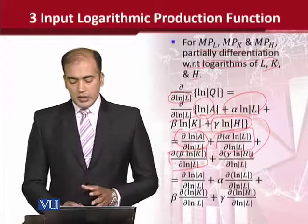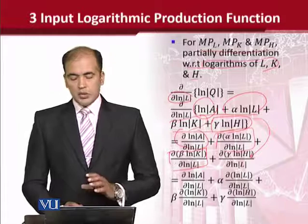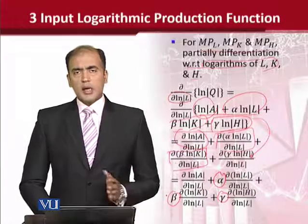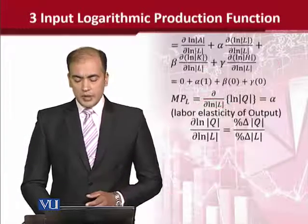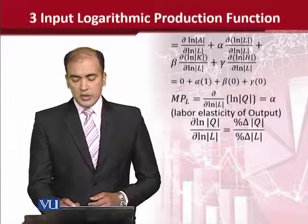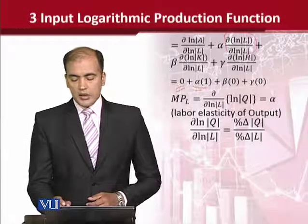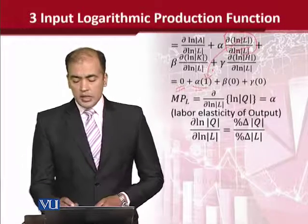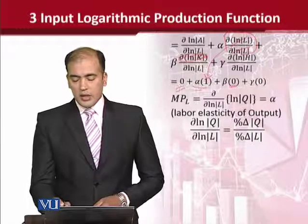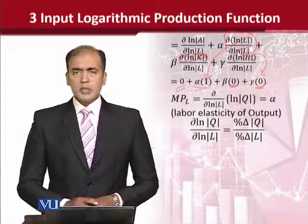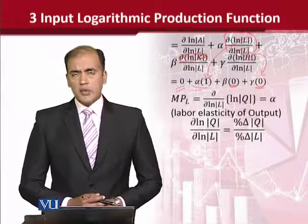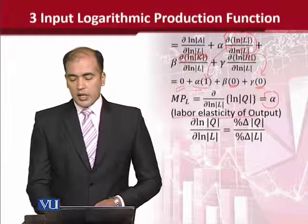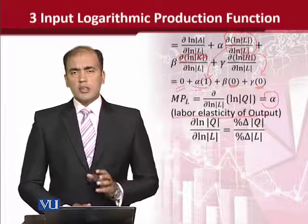So after this, what we see is that we can do the usual calculation. We introduced the parameters outside in the first step so that we can solve this easily. After this, the first term reduces to zero, this term becomes one, because it is clear that the answer will be one. The beta term has no labor terms, so it is zero, and H's result is also zero because it does not have any labor variable. So the result you have is equal to alpha, and this is known as the labor elasticity of output.